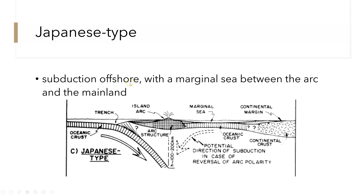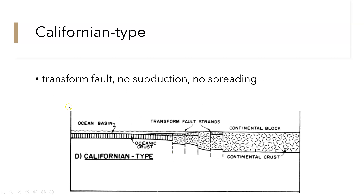The Japanese type involves subduction offshore with a marginal sea between the arc and the mainland, generally creating an island arc — a traditional oceanic-oceanic collision with a trench, oceanic crust subducting beneath thinner oceanic crust that transitions into continental crust, and an island arc forming from volcanic upwelling from the mantle. The Californian type is a transform fault where there is no subduction and no spreading — just two plates sliding past each other, with oceanic and continental crust sliding past one another and transform fault strands in between, creating strike-slip faults like the San Andreas.